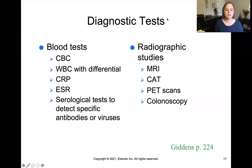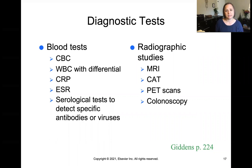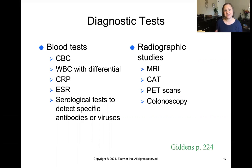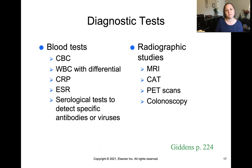Diagnostic testing tries to look for the underlying cause of inflammation. That could include a CBC — complete blood count — or WBC with differential to see what kinds of white blood cells are showing up. C-reactive protein and ESR are nonspecific markers of elevated inflammation in the body — we know there's inflammation but not exactly where. Radiographic studies like MRIs, CAT scans, PET scans, or colonoscopies can also look for underlying causes of inflammation.